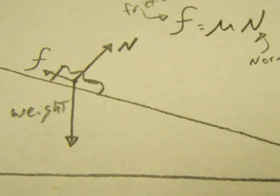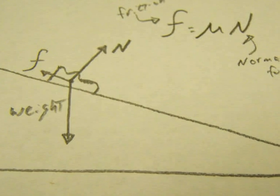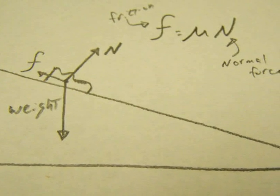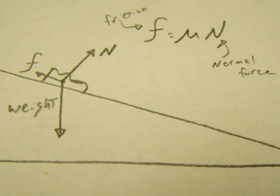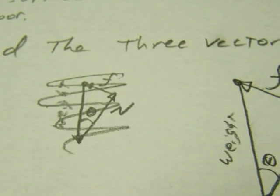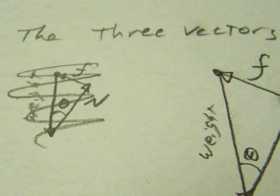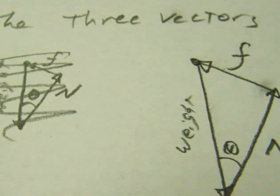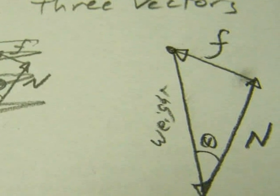Again, with our equation of the frictional force equal to mu, which is the coefficient of friction, times the normal force. If we add the three vectors, we should arrive back at where we started from. That is, either the shoe is sliding down the ramp at a constant speed or hasn't yet begun to slide.